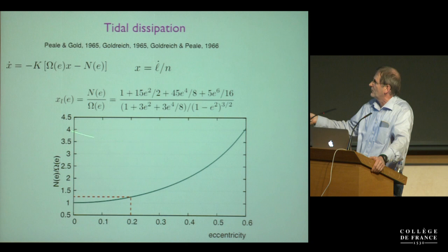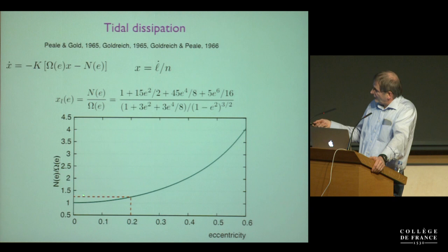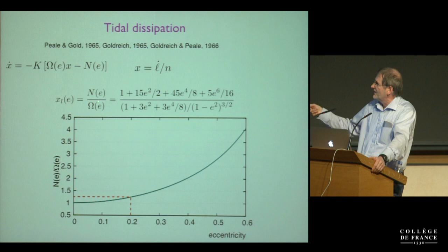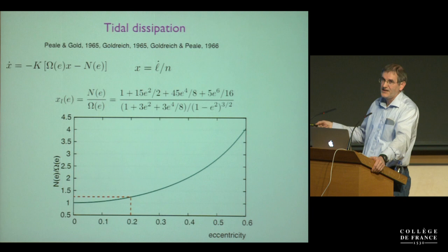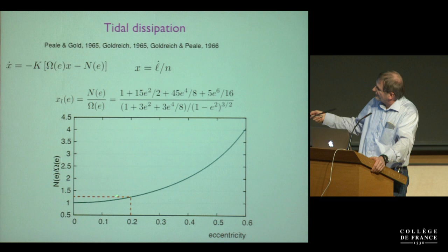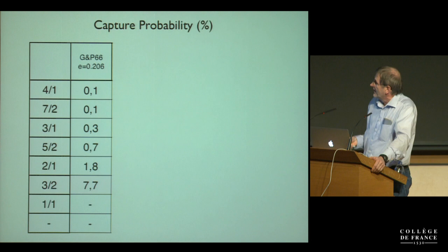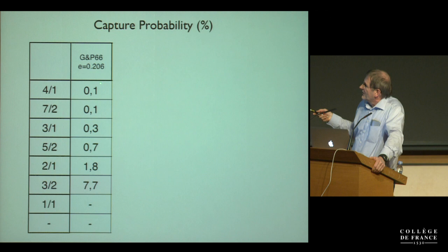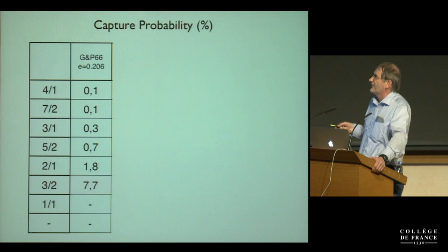Mercury's present eccentricity is 0.2. Starting from a high rotation period and going down, you cross all the spin-orbit resonances and have a probability of being trapped at each. Goldreich and Peale in 1966 found that these probabilities are relatively low — the probability to get trapped in the 3:2 resonance is only about 7.7 percent. You can add core-mantle friction, which makes trapping in resonance much more efficient, but then you get trapped too easily in the 2:1 resonance before reaching the 3:2.